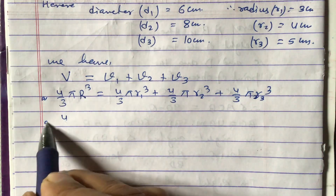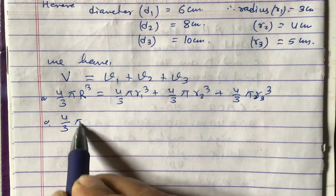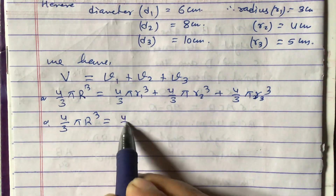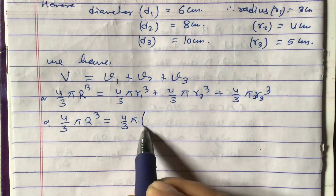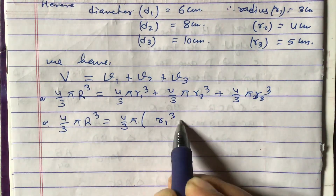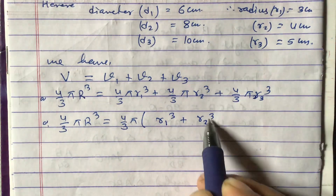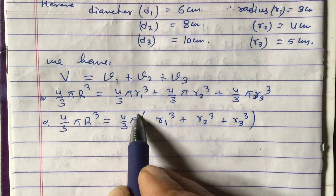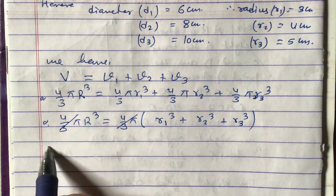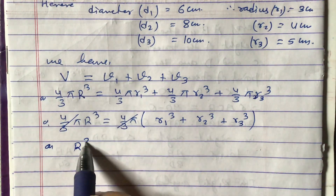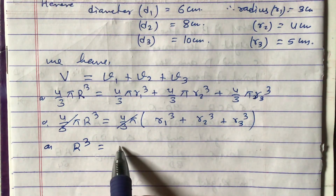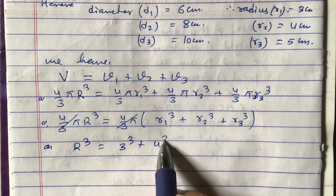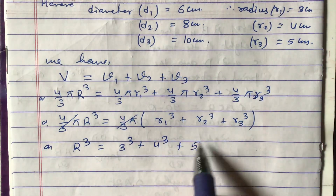We can take (4/3)π as common on the right-hand side. Then (4/3)π cancels from both sides, giving us R³ equals r1³ plus r2³ plus r3³, which is 3³ plus 4³ plus 5³.